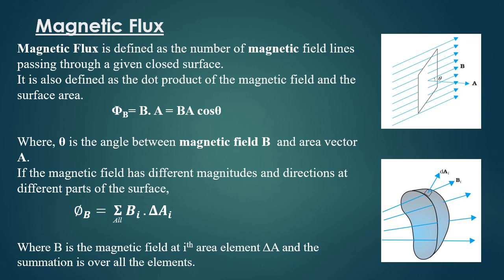Flux can also be written as magnitude of B A cos theta, where theta is the angle between the area vector and the magnetic field.